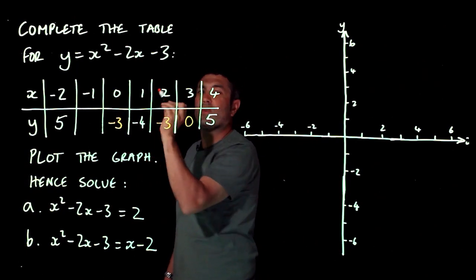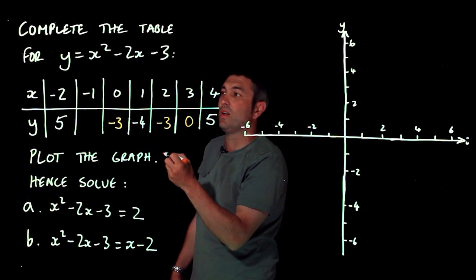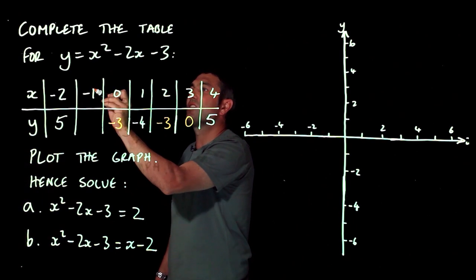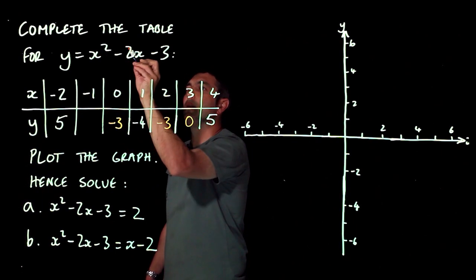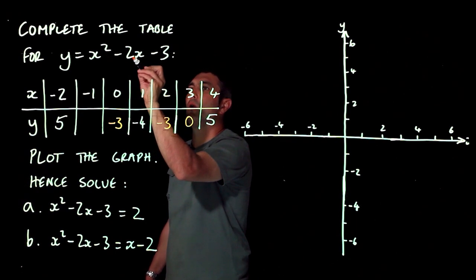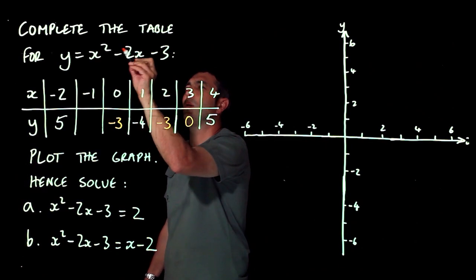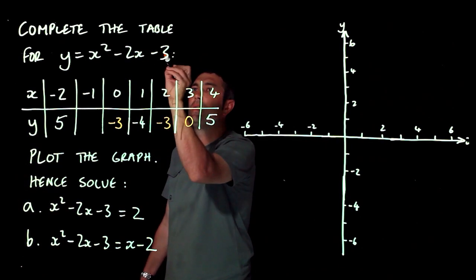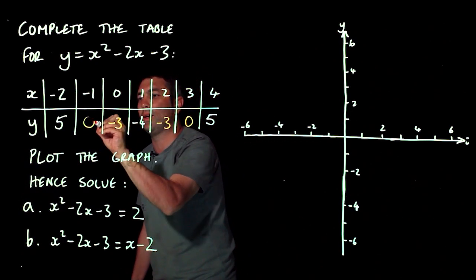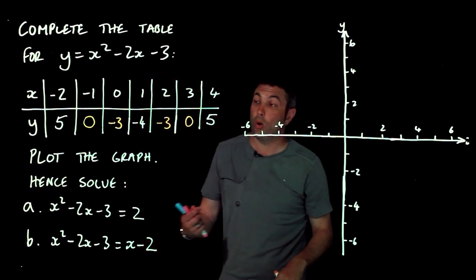So negative 1. Don't forget when you square a negative number, you get a positive answer. So negative 1 squared is 1, take away 2 lots of negative 1, well that becomes plus 2. So 1 plus 2 is 3, take away 3. Fantastic. And that was what I was expecting. So I know I'm right.